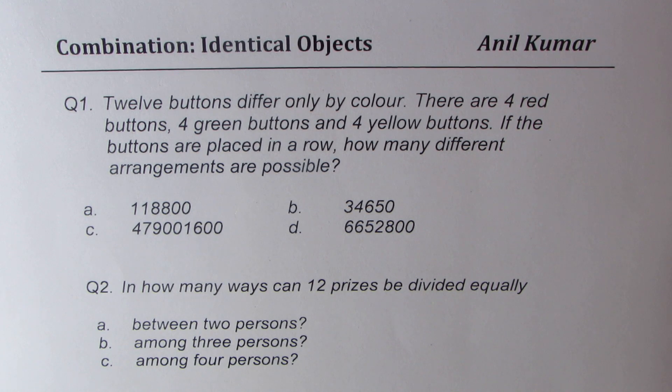Question number one. It is a multiple choice question. Twelve buttons differ only by color. There are four red buttons, four green buttons, and four yellow buttons. If the buttons are placed in a row, how many different arrangements are possible?